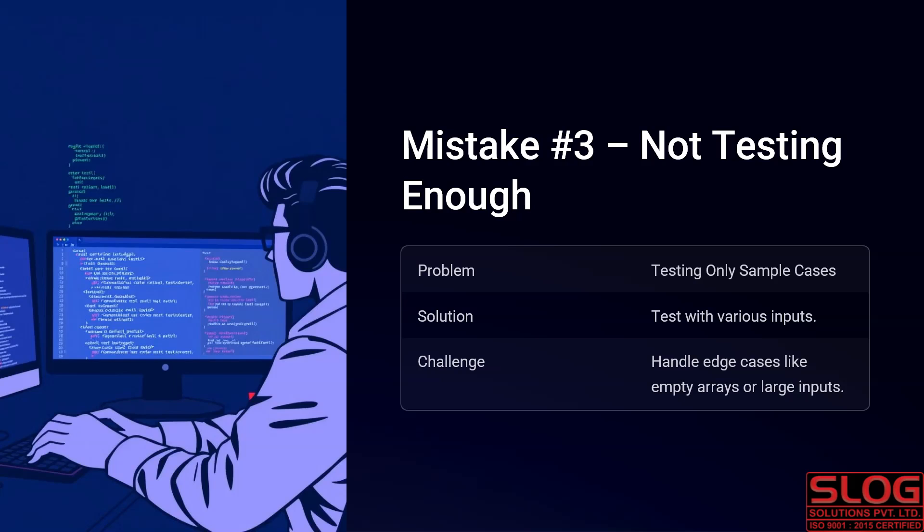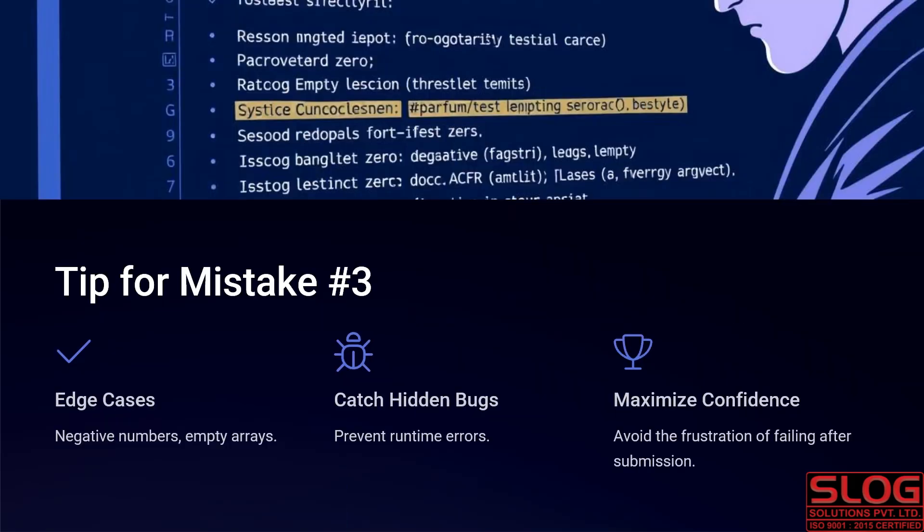When there is a boundary given in the question — for example, dealing with a specific input limit — you have to test with that limit to see if your code can tackle it properly. Tips for mistake 3: for edge cases, test negative numbers and empty arrays to check if your code works efficiently. Then, catch hidden bugs to prevent runtime errors. Finally, maximize confidence: avoid frustration after submission — if something fails and you have time, understand what went wrong, then move on to the next problem.